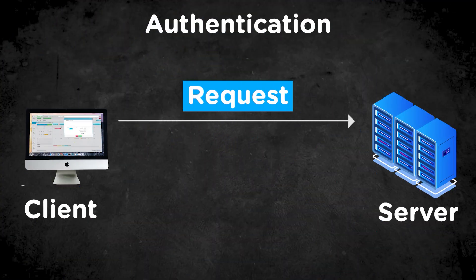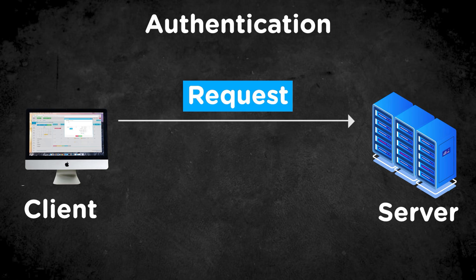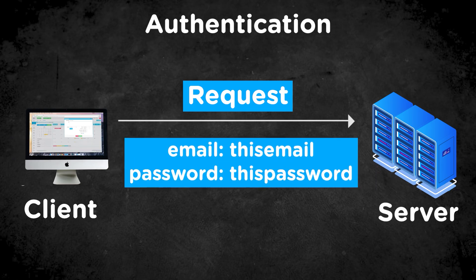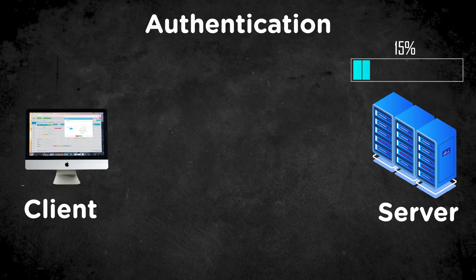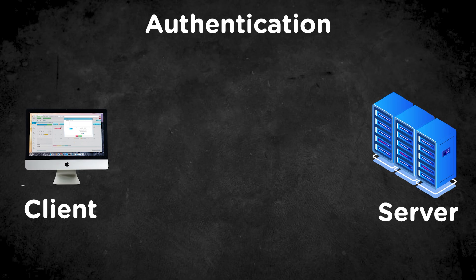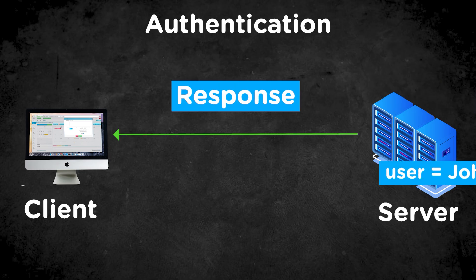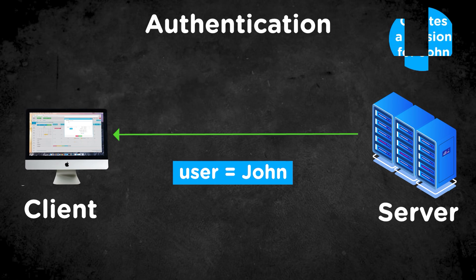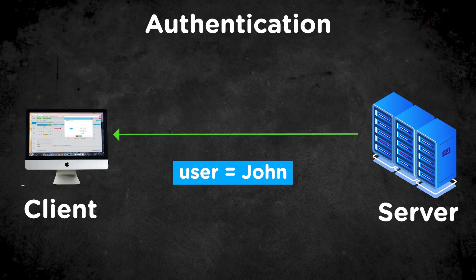To talk specifically about authentication — that's the login process. The first step is the client sends a request to the server saying: I have this email, I have this password, is this person a valid user, and if so, who exactly are they? Then what happens on the server is it crunches that information and determines whether the user exists. If the user does exist, it's going to send that information back down to the client — for example, saying 'this is John.' It also creates a session, which is just a unique ID specifically associated with John.